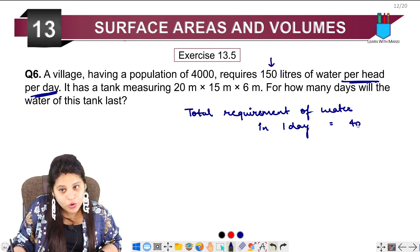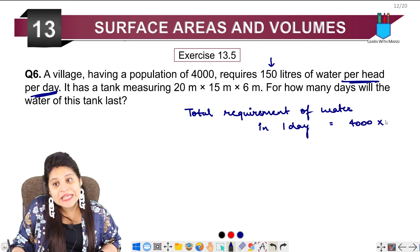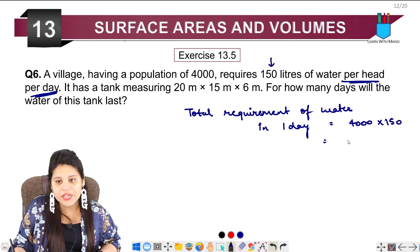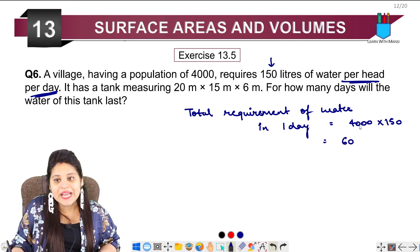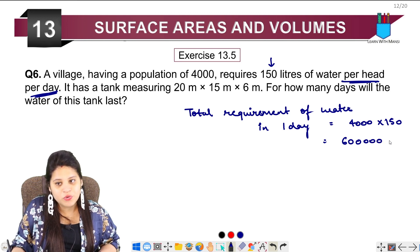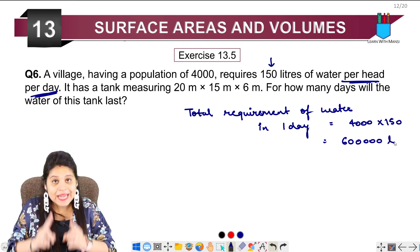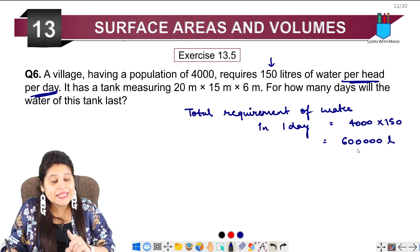See, if our population is 4,000 and every person needs 150 liters of water, so simple: 150 into 4,000 with 1, 2, 3, 4 zeros. So what is the requirement in one day?